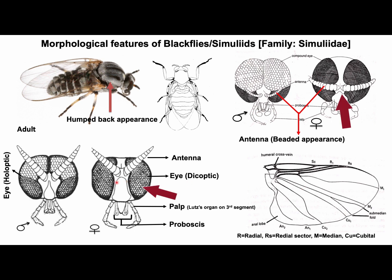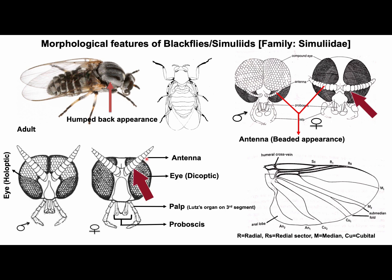Eyes of female are well separated, and this type of eyes is known as dicoptic eyes. Eyes of male flies are larger, broadly contiguous or close together, and this type of eyes is termed as holoptic eyes. So based on holoptic and dicoptic eyes, sexes of black flies can be differentiated. Antenna of simuliids have more commonly 10 to 11 flagellomeres or segments. Antenna segments in both sexes are small, globular, and compacted together giving a beaded appearance, which is another important feature of black flies.